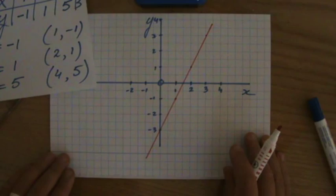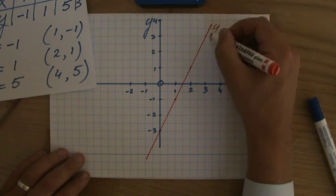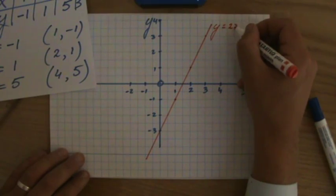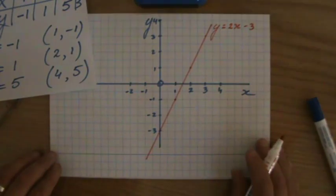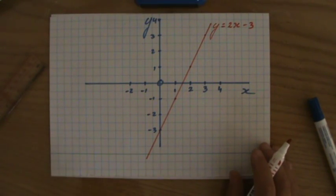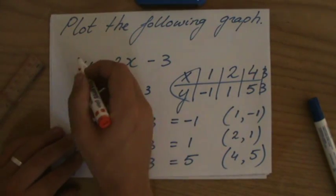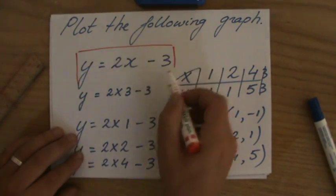And I'll label it y equals 2x minus 3. I'm just putting the equation next to my line to show everybody what I've done. So that is the graph of the linear equation y equals 2x minus 3.